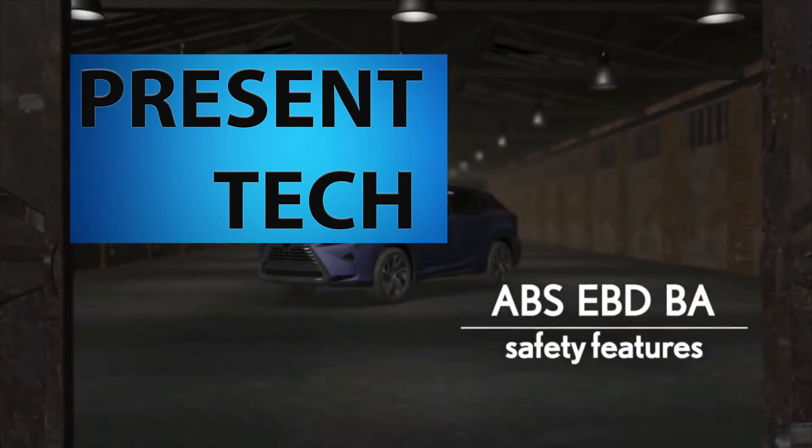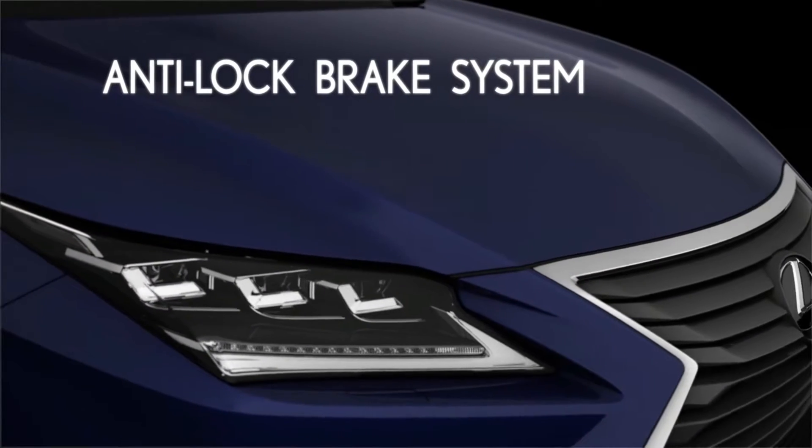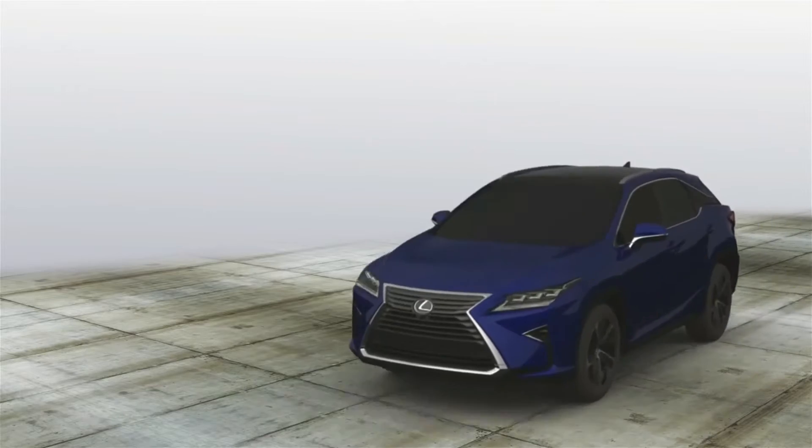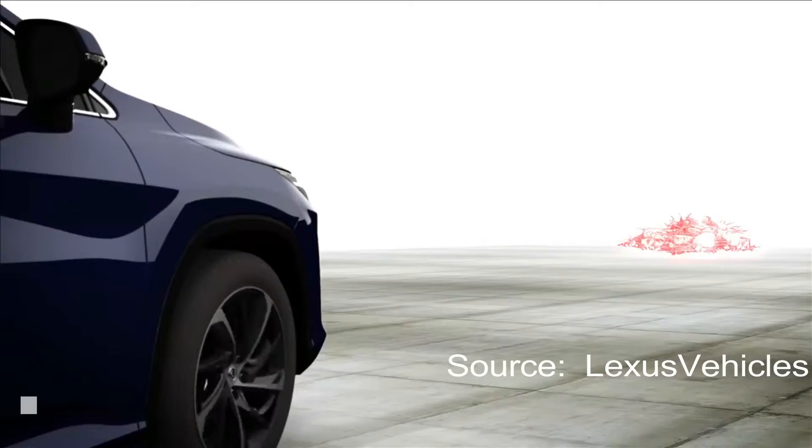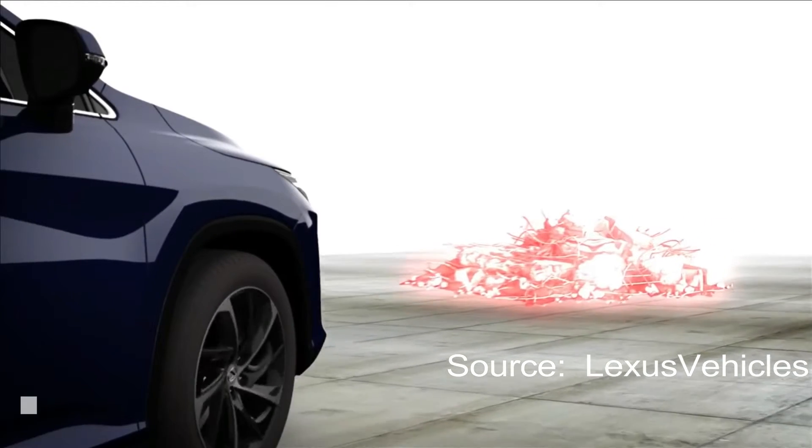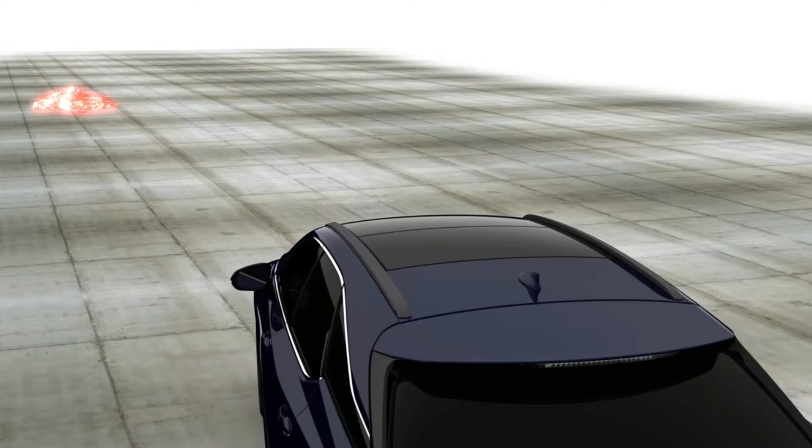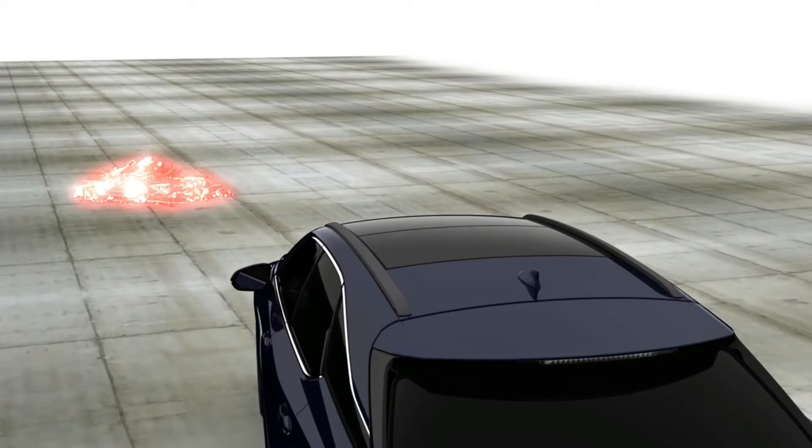ABS, EBD, and BA. The Anti-Lock Brake System, or ABS, helps prevent wheel lockup and delivers improved steering control during hard braking. ABS helps the tires maintain better grip on the pavement during difficult stops and enables tires with better grip to stop the vehicle more effectively.